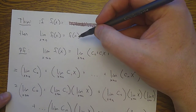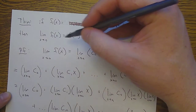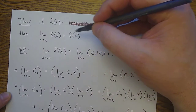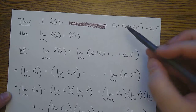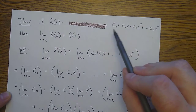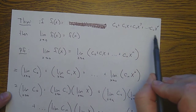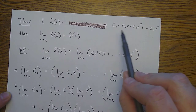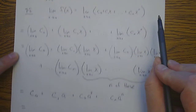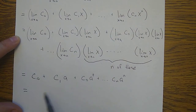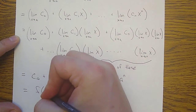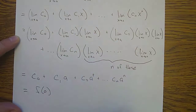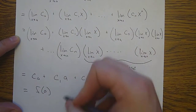In the end I was claiming that the limit we get is the same as f(a). So let's check — f(x) is c0 plus c1x plus dot dot dot plus cn x to the n, so sure enough f(a) would be c0 plus c1a plus dot dot dot plus cn a to the n. That is f(a).